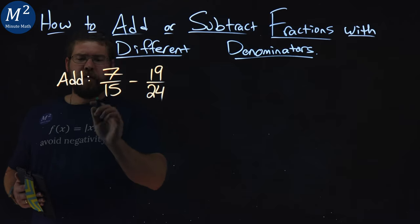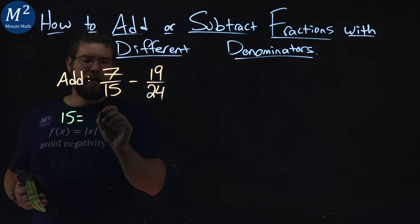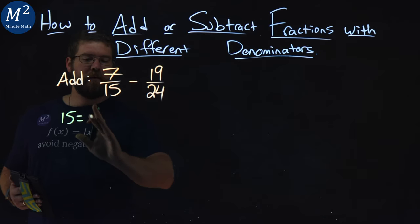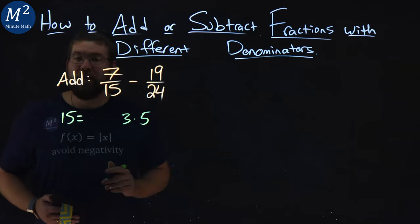The LCD of 15, or the multiples of 15, is 3 times 5.